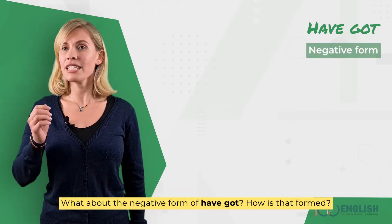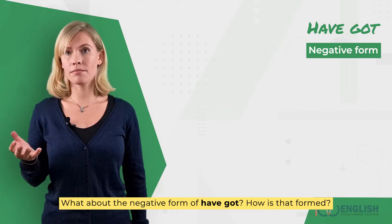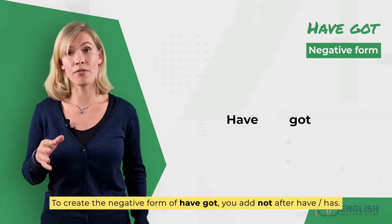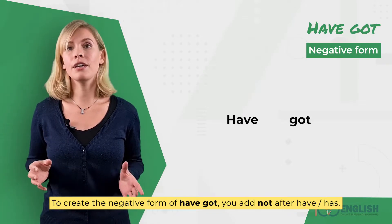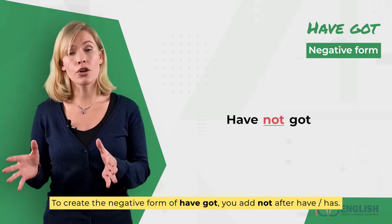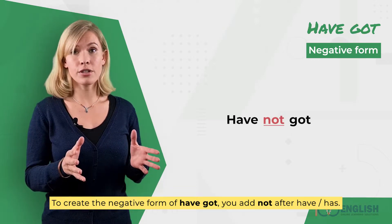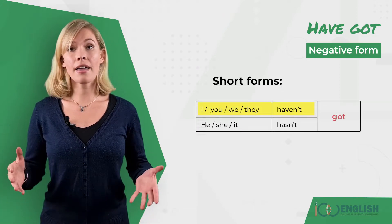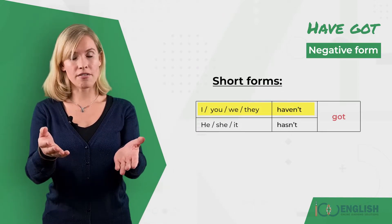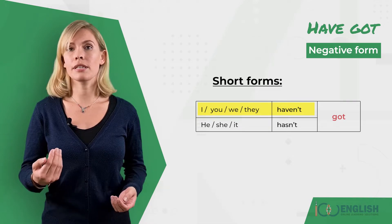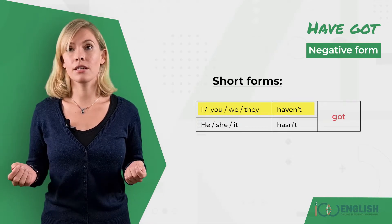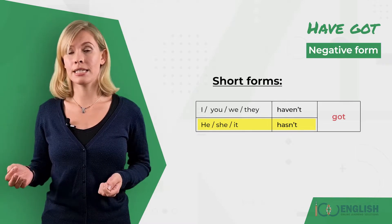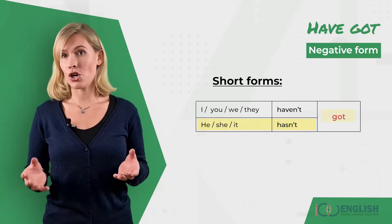What about the negative form of have got? How is that formed? To create the negative form of have got, you add not after have or has. The short forms are: I haven't, you haven't, we haven't, they haven't got. He hasn't, she hasn't, it hasn't got.